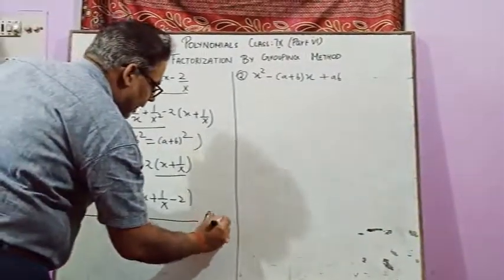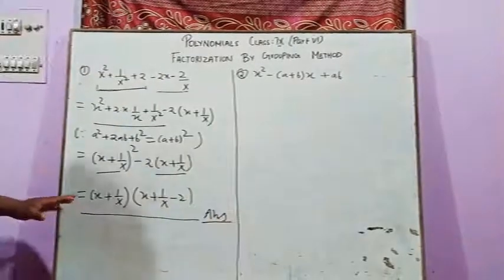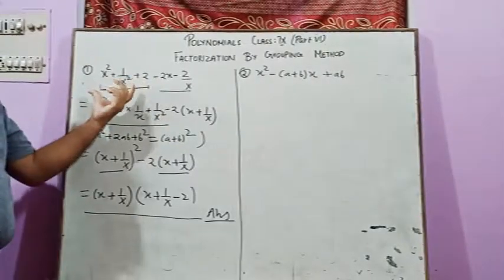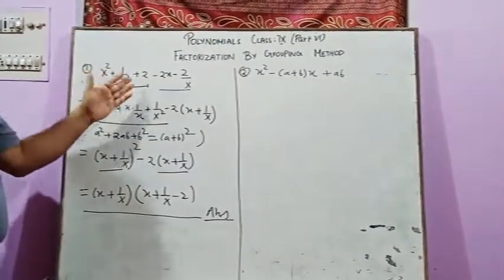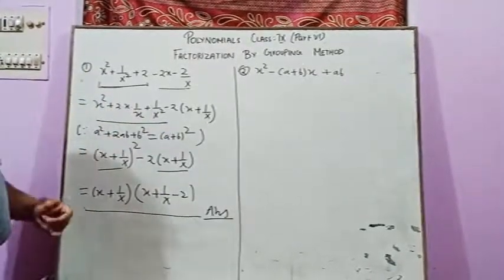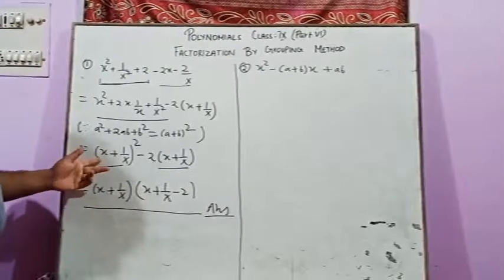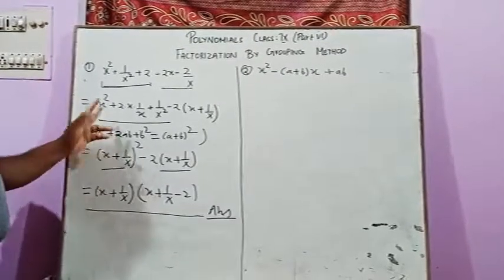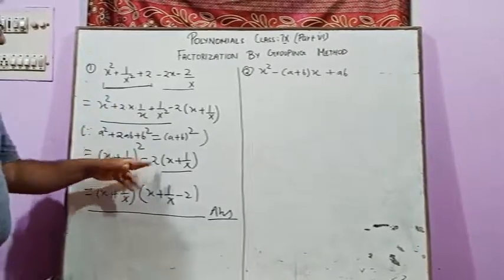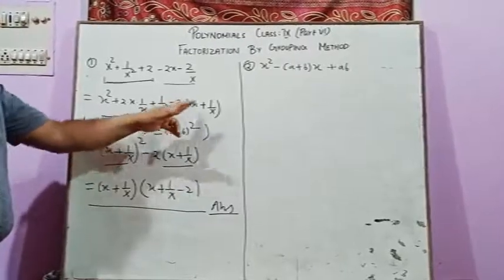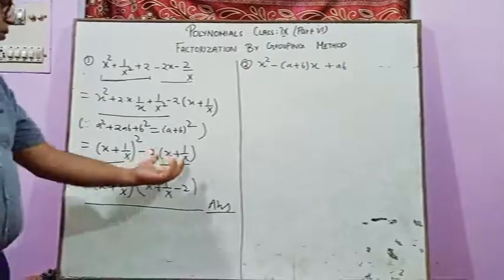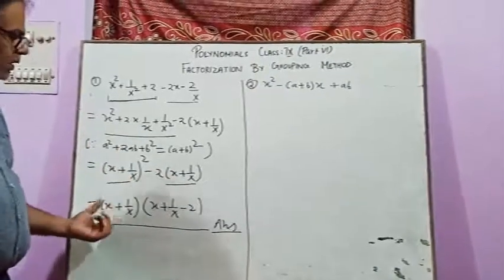You can see that x plus one upon x will be divided into two parts. If you look at this formula, x plus one upon x is common, so this is our answer.